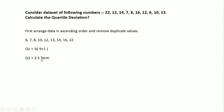Q3 is calculated using the formula: (3/4) × (n + 1). With n = 9, we get (3/4) × 10 = 7.5. The 7.5th term does not exist directly either, so we need to perform additional interpolation calculations for both Q1 and Q3.